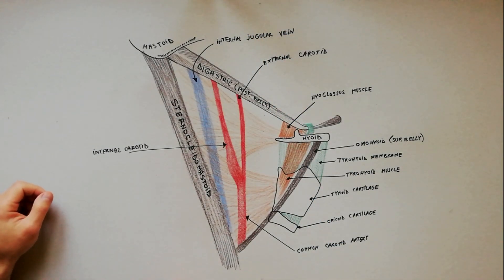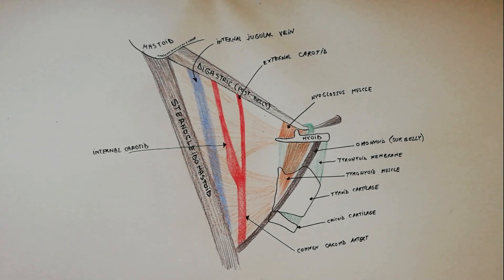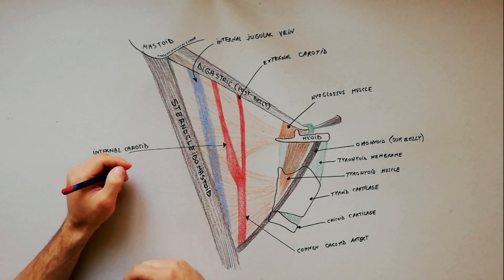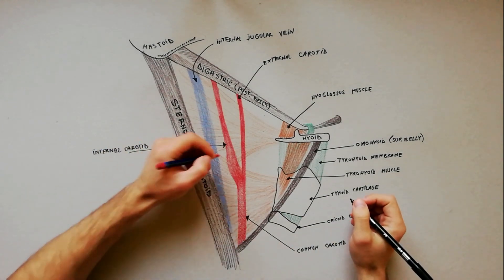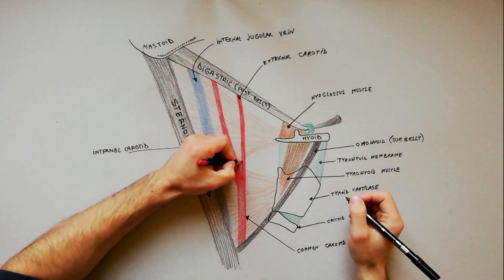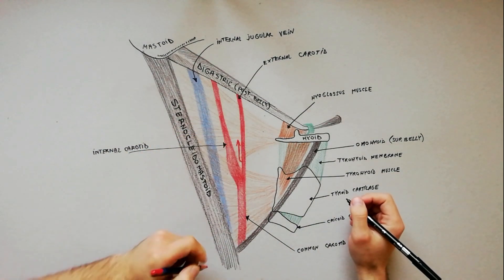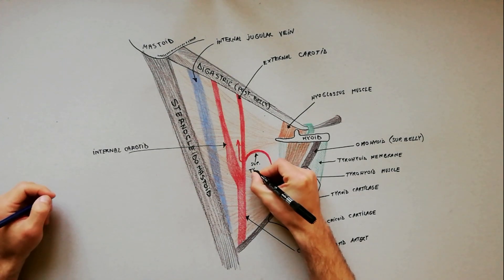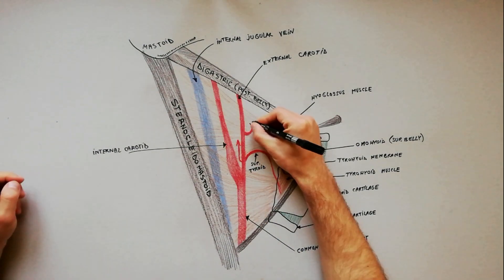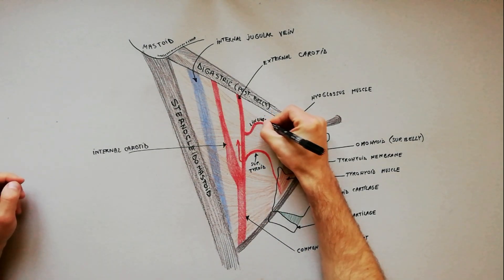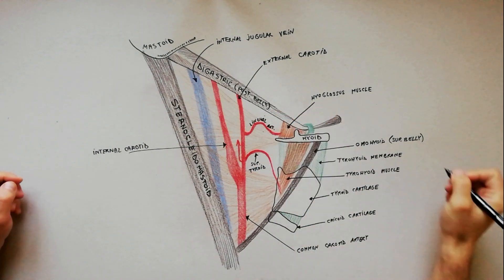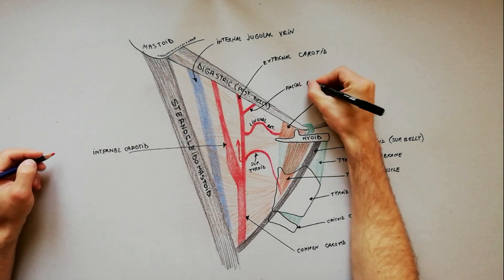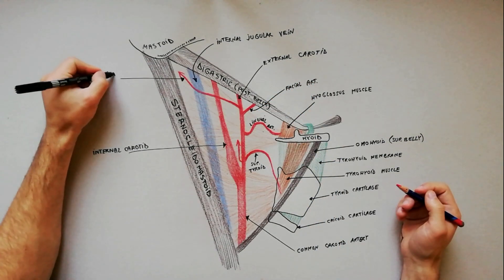The first five branches of the external carotid artery are also present in this region. Those branches are the ascending pharyngeal artery, superior thyroid artery, lingual artery, facial artery, and occipital artery.